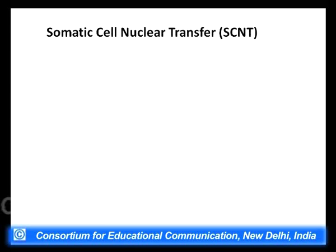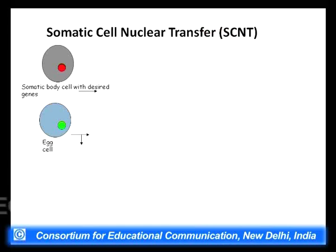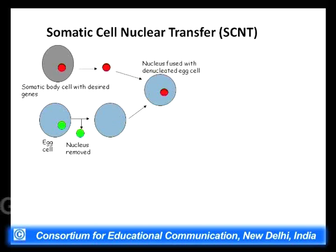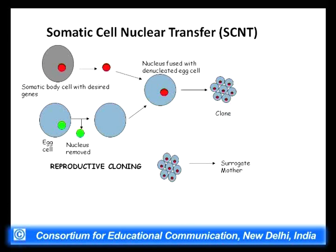The other method, somatic cell nuclear transfer, involves taking the nucleus from a somatic body cell and putting it into an egg cell whose nucleus has been removed, getting a zygote whose nucleus comes from the somatic body cell of the organism we want to clone. We then put this into a surrogate mother to get an organism that would exactly resemble the organism from whom the somatic body cell came.